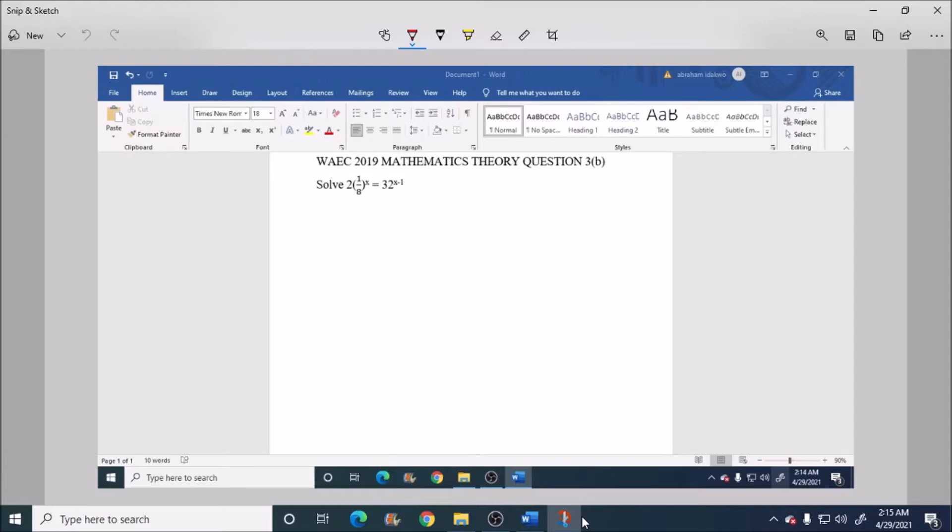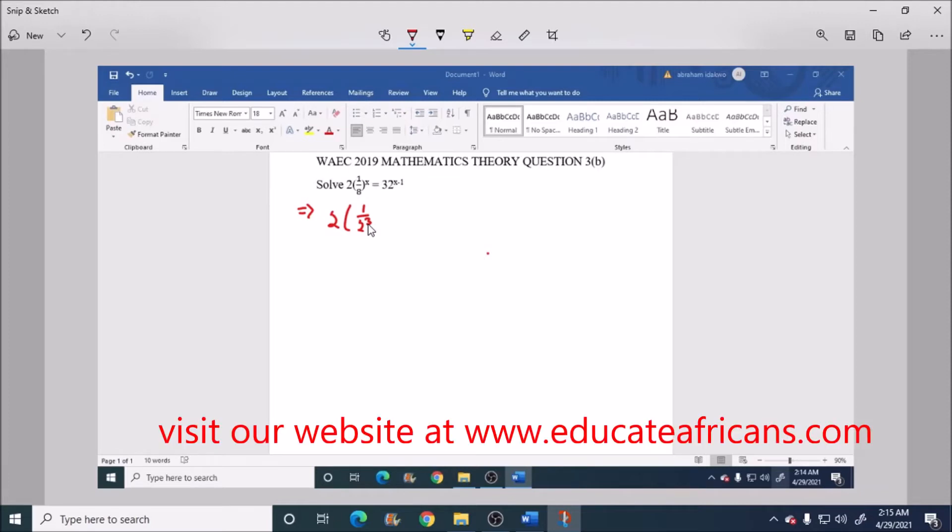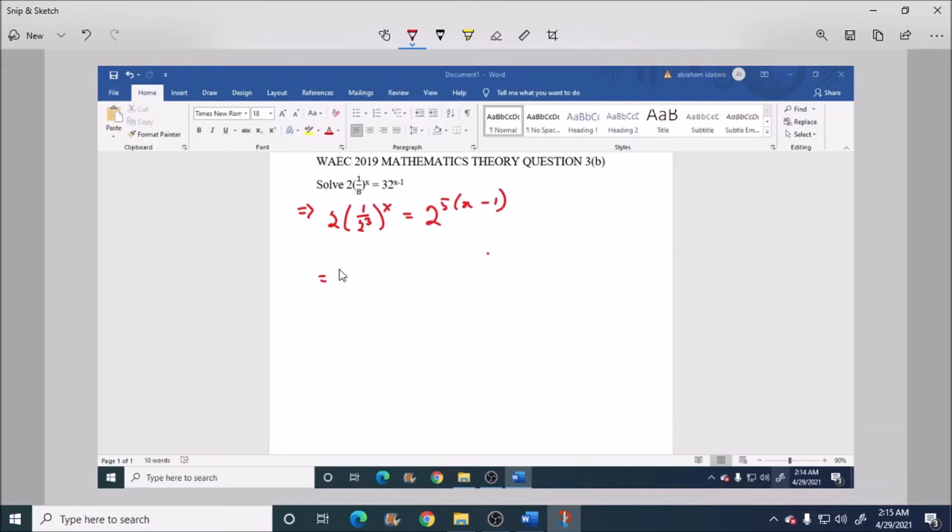Now this is 2 into 1 over 2 raised to power 3 raised to power x is equal to 2 raised to power 5 into x minus 1. Now this is the same thing as saying 2 into 2 raised to power minus 3.